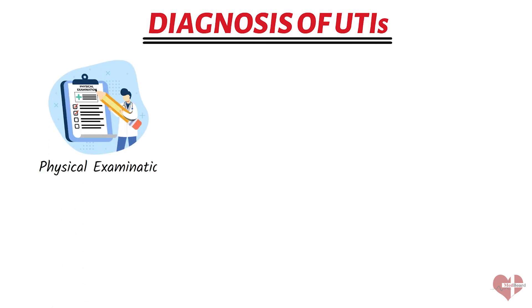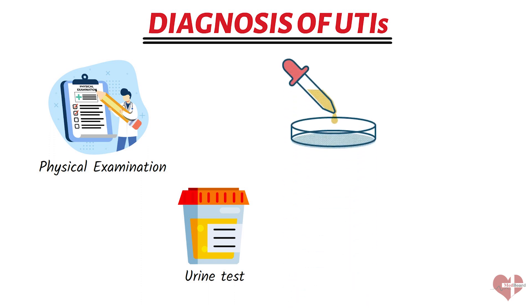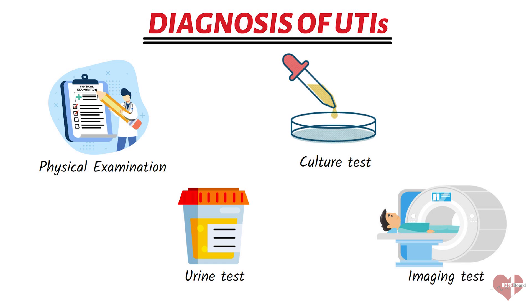To diagnose a UTI, your doctor may perform a physical exam and ask questions about your symptoms. They may also order one or more tests: a urine test, where a urine sample is tested for the presence of bacteria or other signs of infection; a culture test, to identify the specific type of bacteria causing the infection and help determine the most effective treatment; and imaging tests such as an ultrasound or CT scan to check for any abnormalities in the urinary tract contributing to the infection.